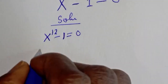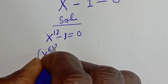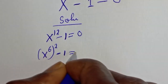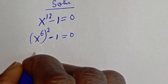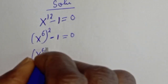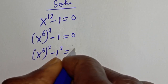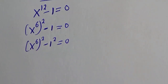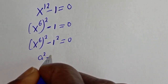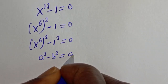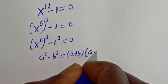s raised to power 12 can be written as s raised to power 6, squared, minus 1 is equal to 0. This is the same thing as s raised to power 6 squared minus 1 squared is equal to 0. This is in the form of a perfect square difference. If you have a squared minus b squared, this is equal to a plus b, bracket, a minus b.